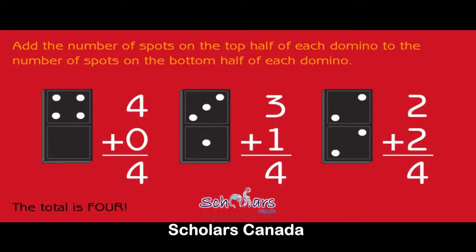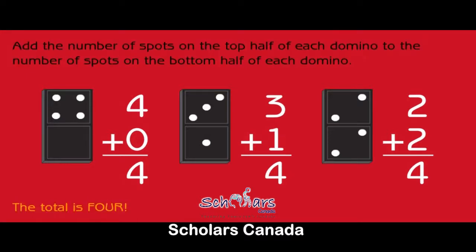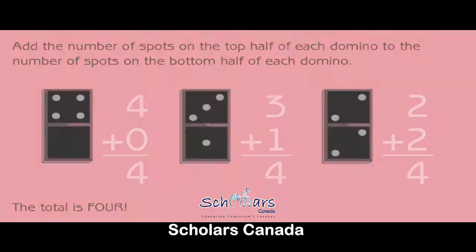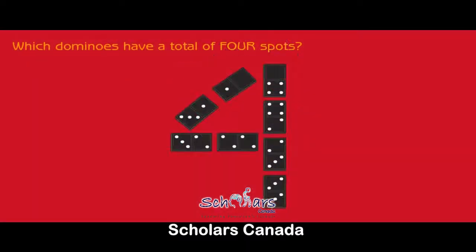Add the number of spots on the top half of each domino to the number of spots on the bottom half. The total is four. Four plus zero equals four. Three plus one equals four. Two plus two equals four. Which dominoes have a total of four spots?